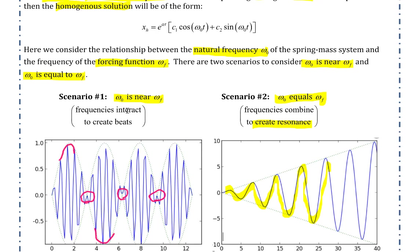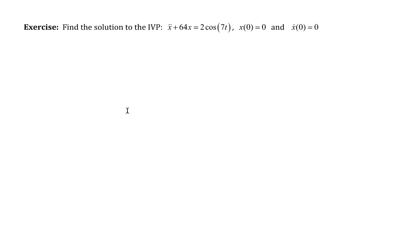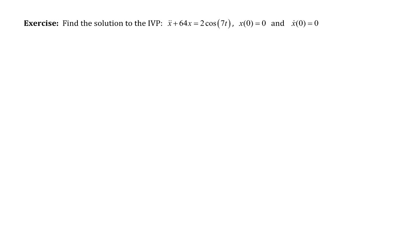Let's look at an example. Consider the initial value problem: x'' + 64x = 2cos(7t). Let's first start by looking at our homogeneous solution.